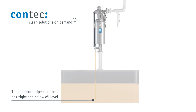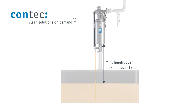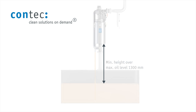The oil return pipe must always be below the oil level, so that the oil can flow back into the tank. The distance between the lower edge of the filter housing and the highest oil level must be at least 1,300 millimeters.